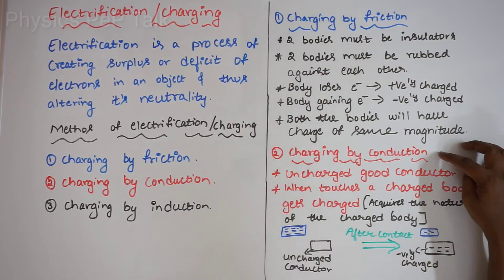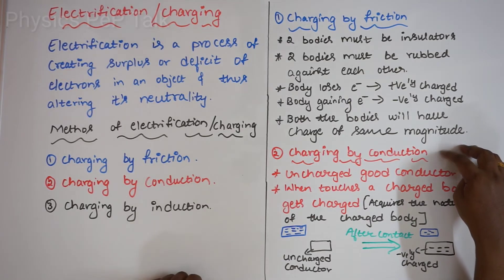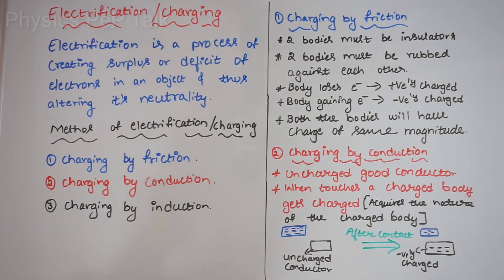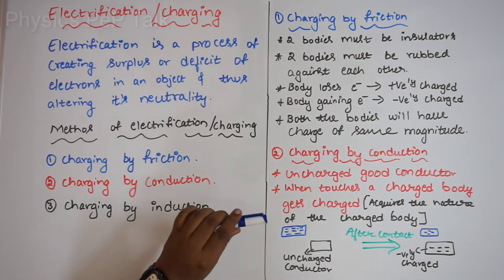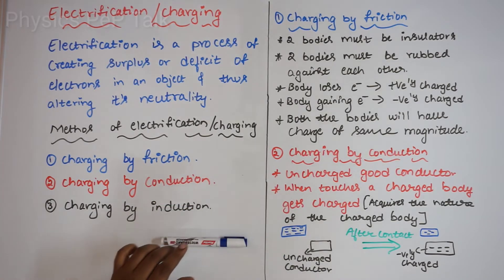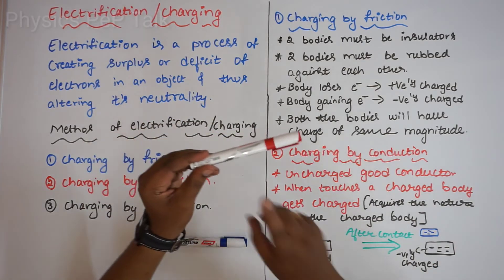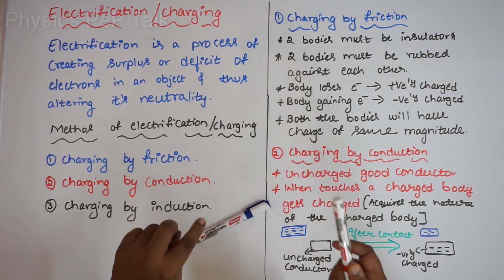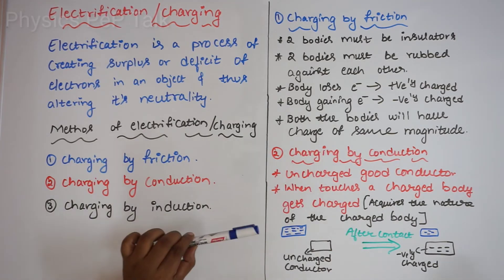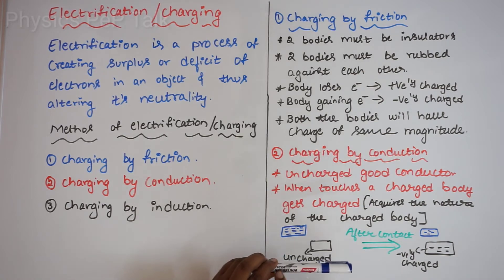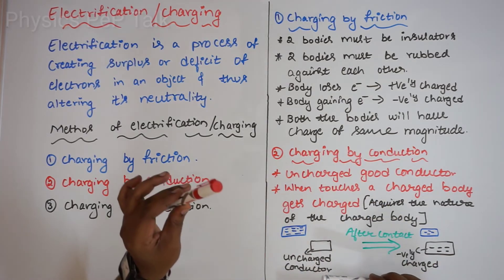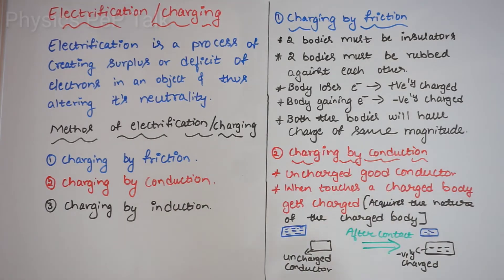Charging by conduction: this type of charging involves touching. The uncharged body should be a good conductor. I will bring a negatively charged body and touch it to the good conductor. As a result, electrons from the negatively charged body get transferred onto the good conductor. The good conductor will attain the same nature as that of the charged body. This type of charging is called charging by conduction.